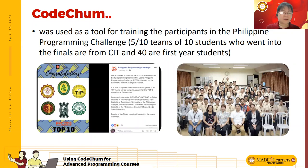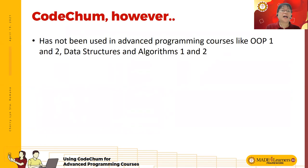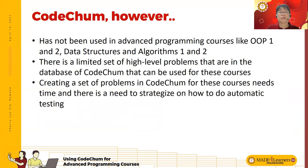I want to attribute that success to Cochum, because through Cochum they were able to practice and test their code. However, Cochum has not been used in advanced programming courses like object-oriented programming, data structures, and so on, because there's a limited set of high-level problems in Cochum's database that can be used for these courses.